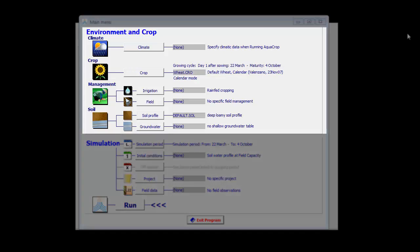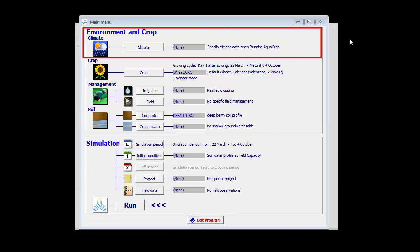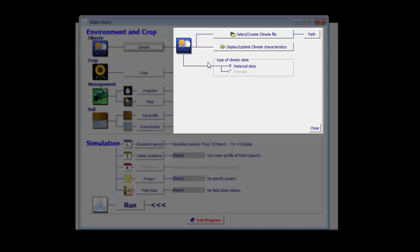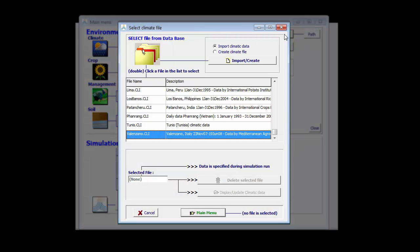In the top panel of the main menu, climatic data is specified. Clicking on the climate button, the user gets access to the management panel of the climate file. By clicking on the select create climate file button, we get access to the database where the climate files are listed. One can select a climate file or create one. So let's select the Tunis climate file.